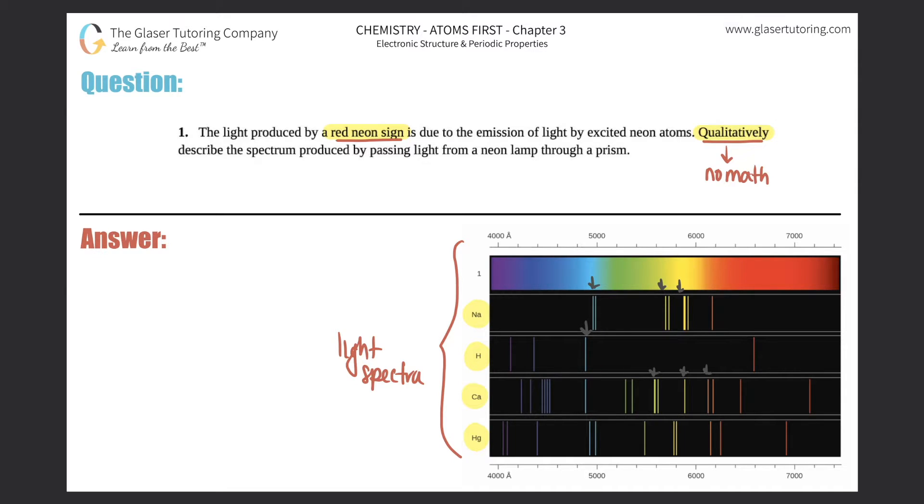These lines represent wavelengths. So every element will be producing many different wavelengths. So a neon element will also probably be producing multiple wavelengths as well.